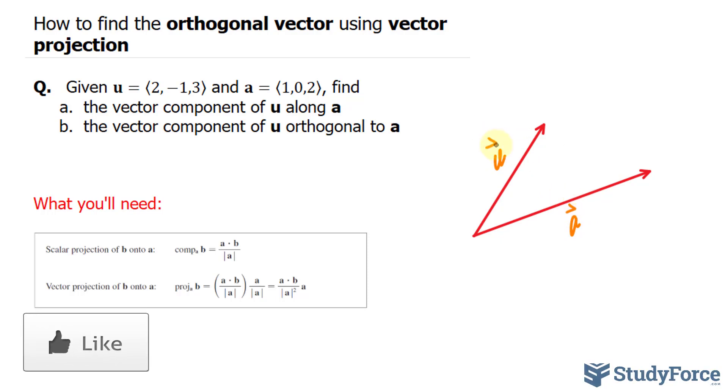Now when you find the vector projection of u onto a, you're actually finding a vector that is the component of this along a. So that could reach up to here. So that is the projection of u onto a. And that answers question a, which we'll focus on in a moment.